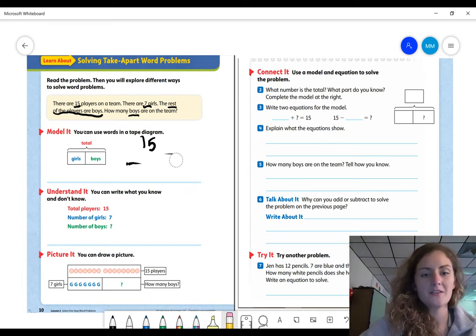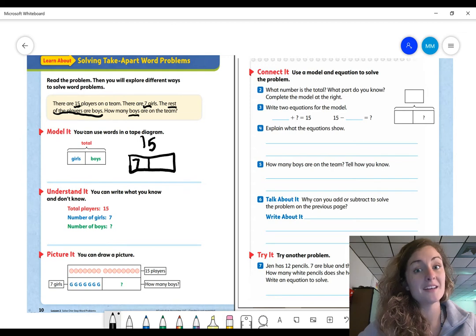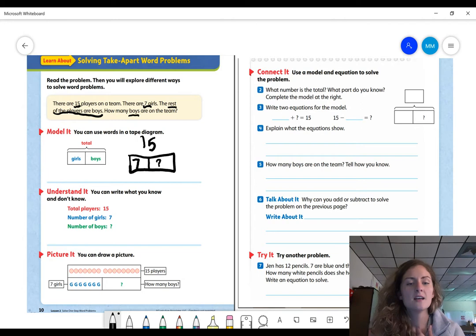It says there are seven girls. That box looks kind of rough. We're going to fix that up a little bit. There are seven girls. So I know seven is one of my parts. The rest are boys. Do we know how many are boys yet? Not yet. So what am I going to put? A question mark.